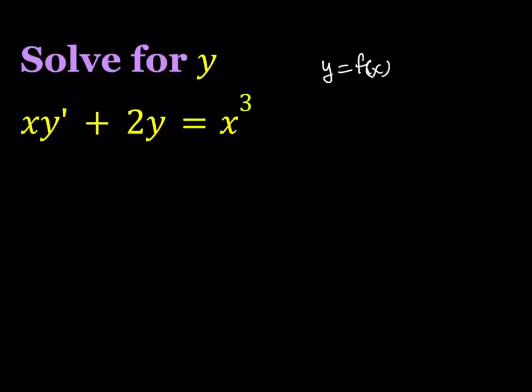Take a look at this expression. We have x times y prime, which could look like the derivative of a product. Because we have the function x times the derivative of something else. But the 2y doesn't really fit that pattern. So in order to make it fit that pattern, we're going to multiply both sides by x. I don't want x to be 0.